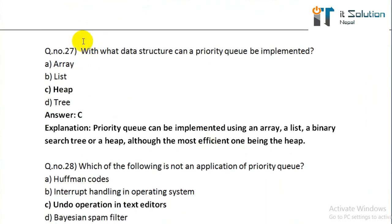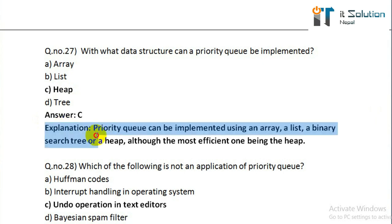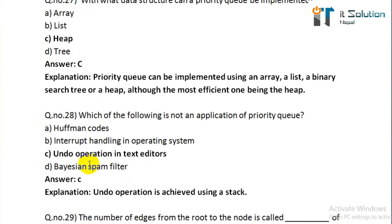Question number twenty-seven: with what data structure can a priority queue be implemented? Its correct answer is heap. Question number twenty-eight: which of the following is not an application of a priority queue? Option C — undo operation in text editor — is the correct answer.